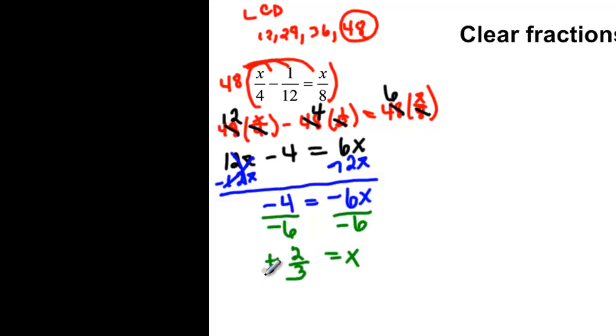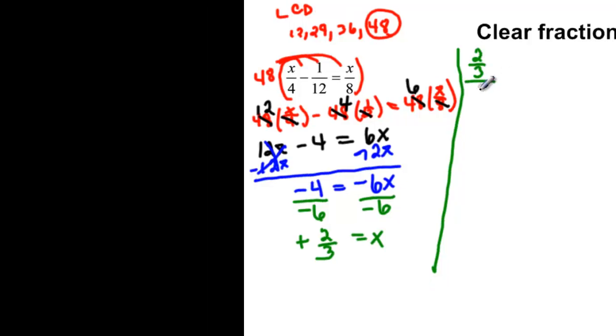So we think that it's 2 thirds, so let's see if we can check this. 2 thirds divided by 4 is kind of tricky to check when you have a fraction, but just remember that dividing is the same thing as multiplying by the reciprocal. So we say 2 thirds times 1 over 4, the reciprocal of 4, minus 1 over 12 equals 2 thirds times the reciprocal of 8, or 1 over 8.